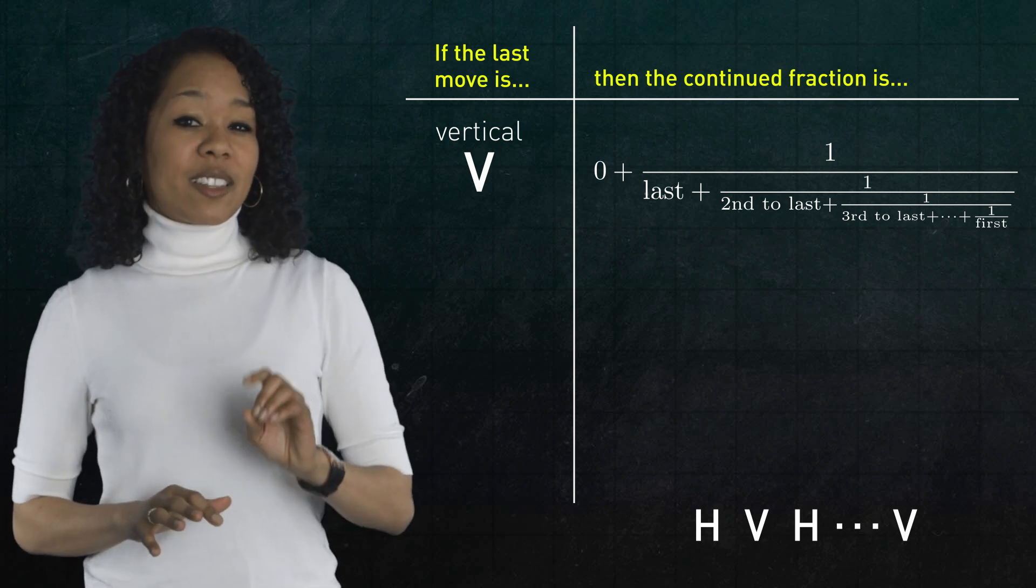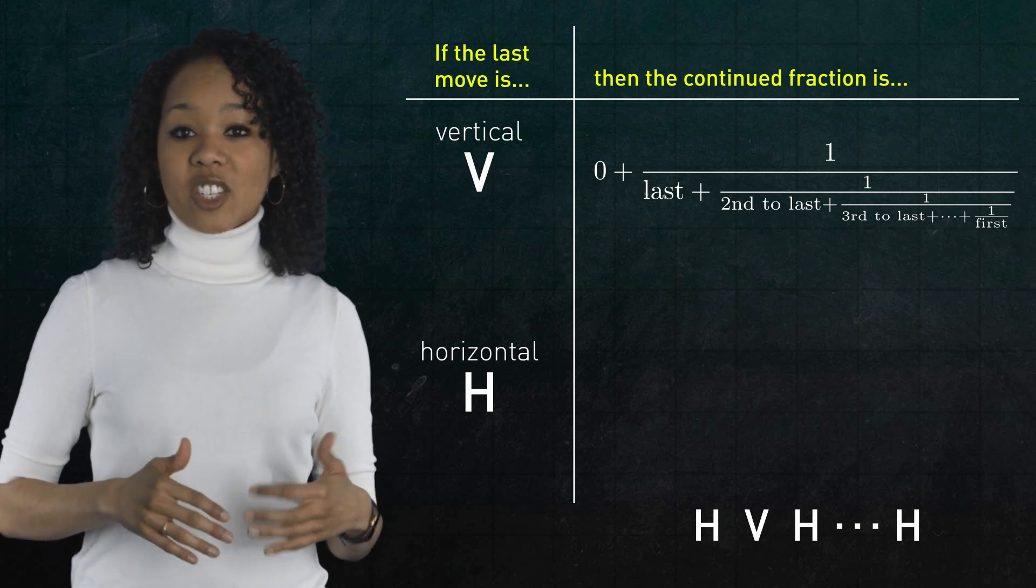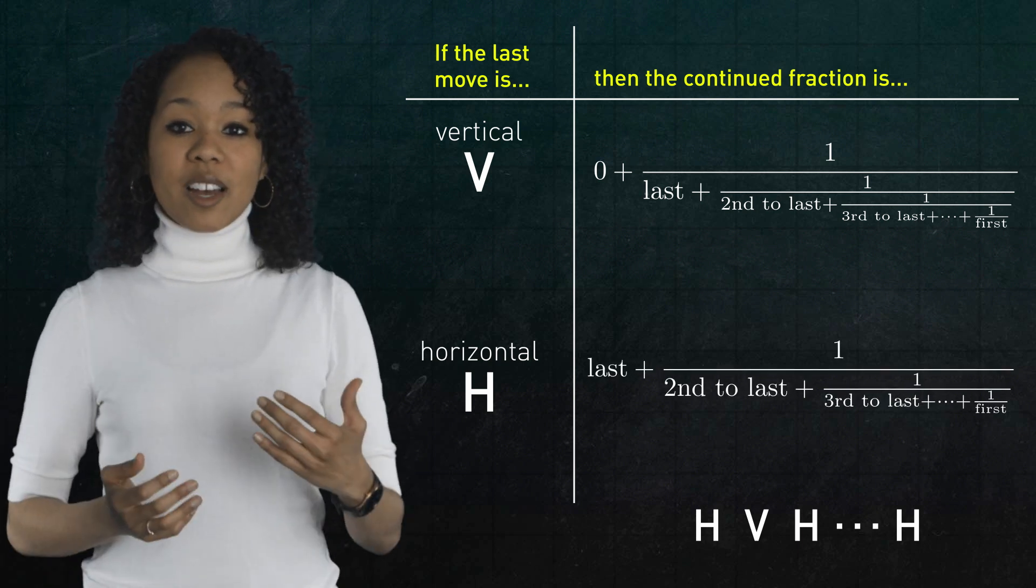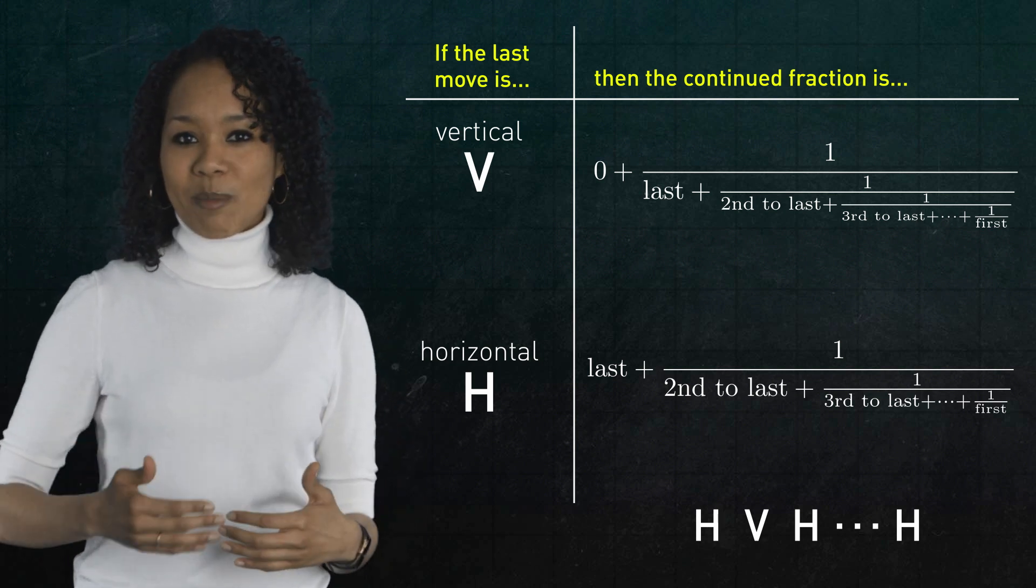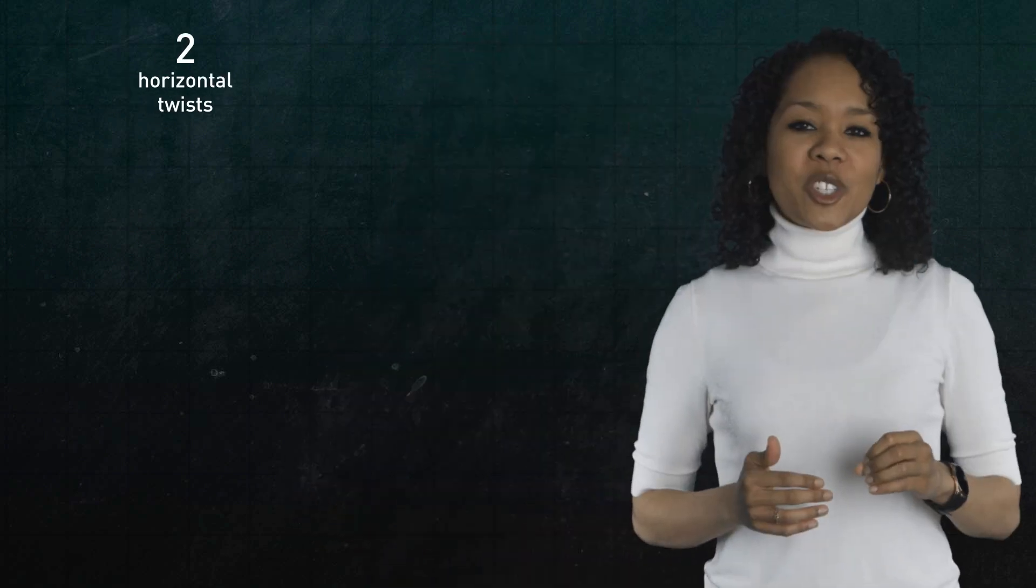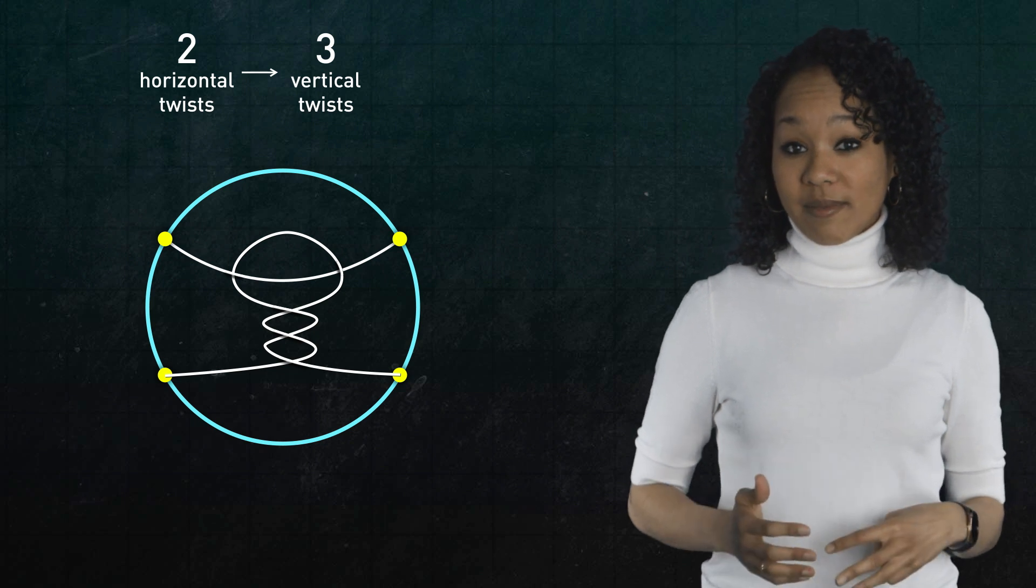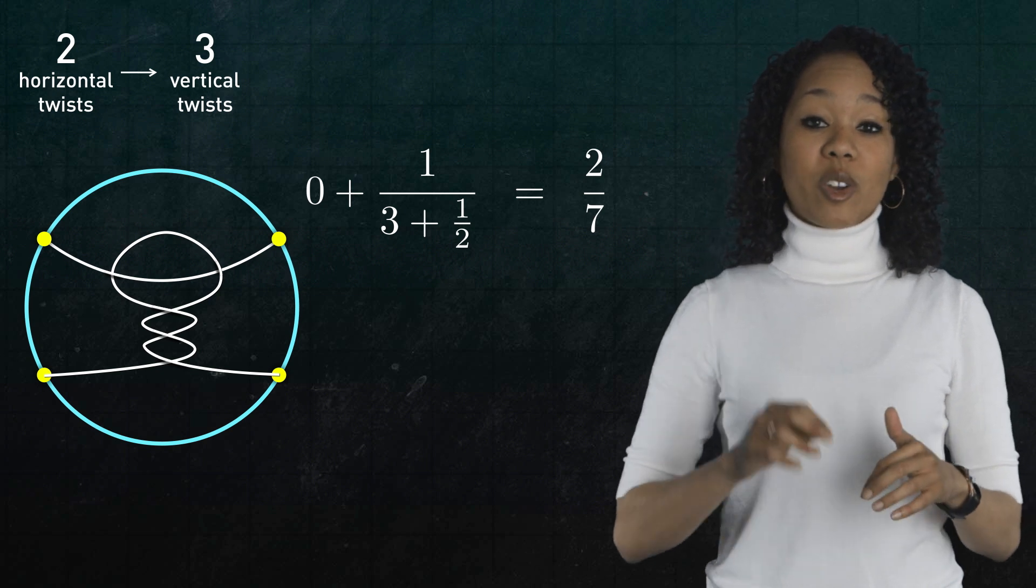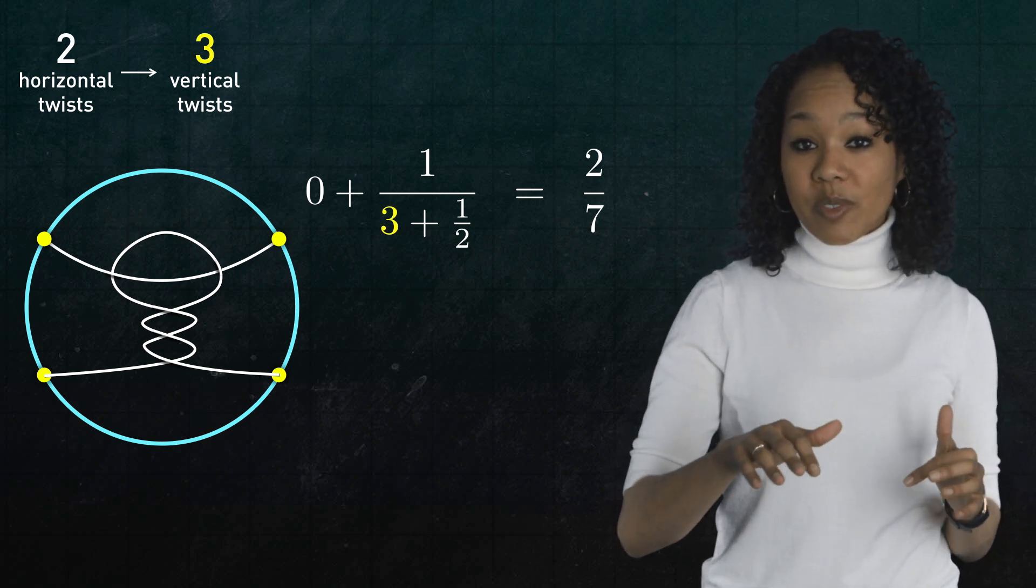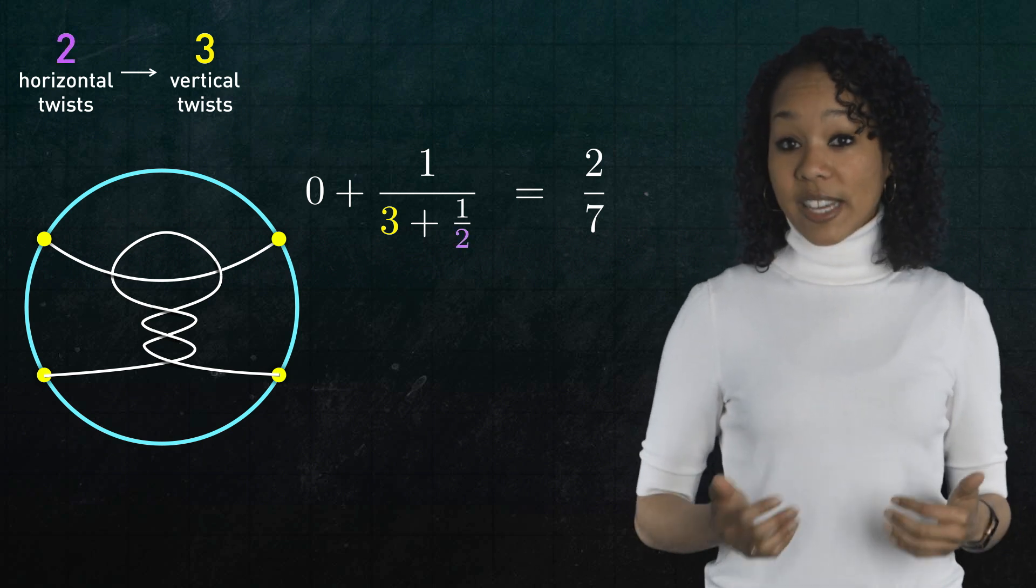Otherwise, if the last move you do is a horizontal twist, then the continued fraction is just the last number plus one over the second to last number plus one over the third to last number and so on. Okay, it's way easier than it sounds. For example, let's first do two horizontal twists followed by three vertical twists. This corresponds to the continued fraction zero plus one over, and now look at the last move, three, plus one over the first move, two. The result is two over seven.